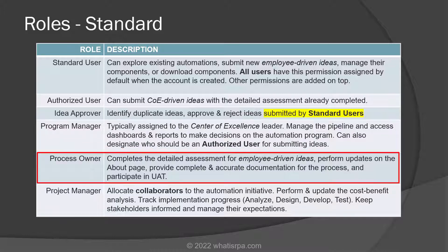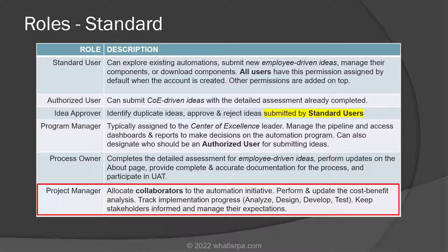Process owners are subject matter experts who can help complete the detailed assessments for employee-driven ideas submitted by standard users. They can also perform updates on the About page, provide complete and accurate documentation for the process, and participate in UAT. The project manager allocates collaborators to the automation initiative, performs and updates the cost-benefit analysis, tracks implementation progress while the idea works through the analyze, design, develop, and test phases, and keeps stakeholders informed and manages expectations.